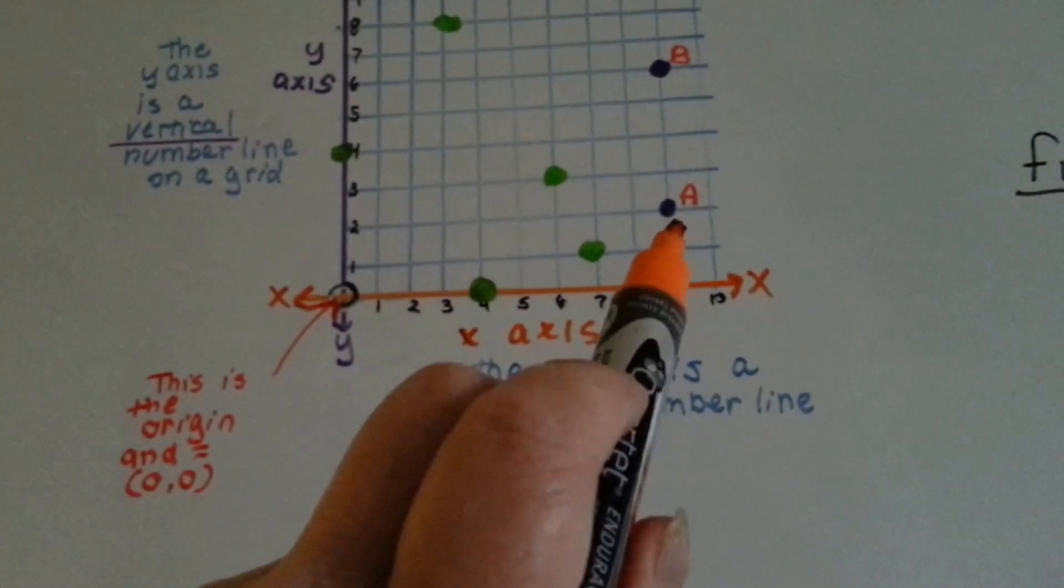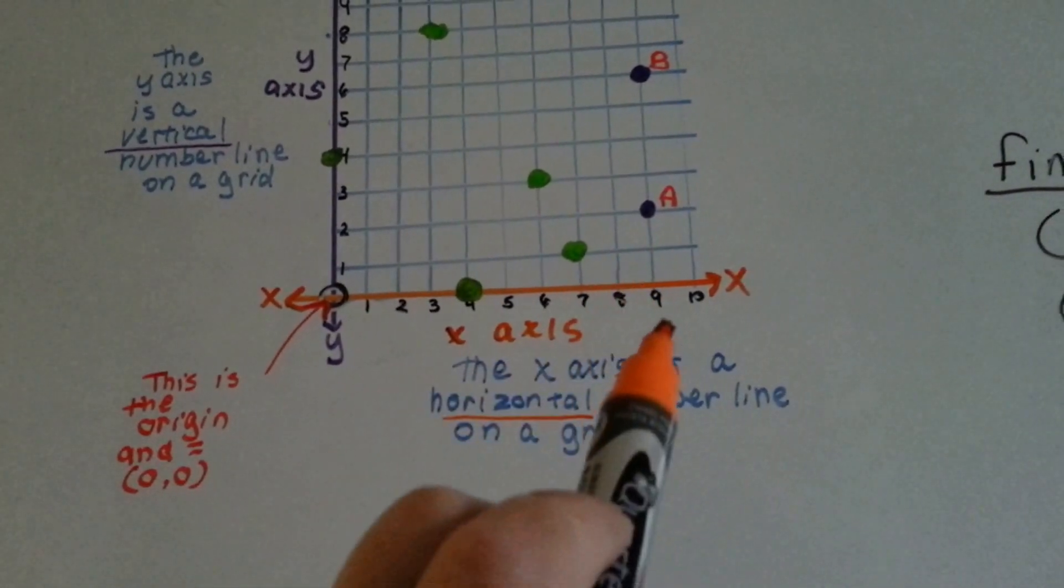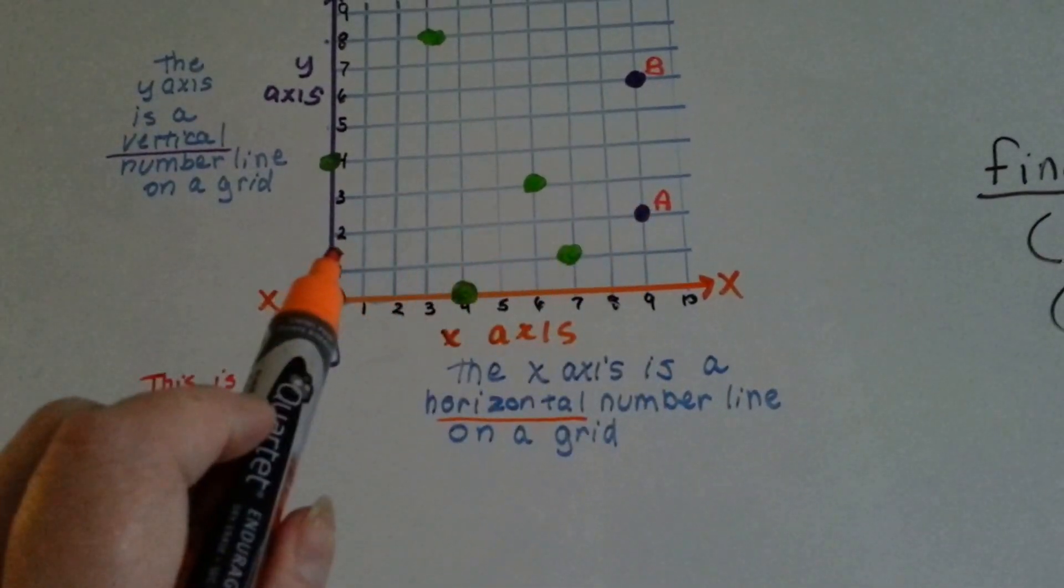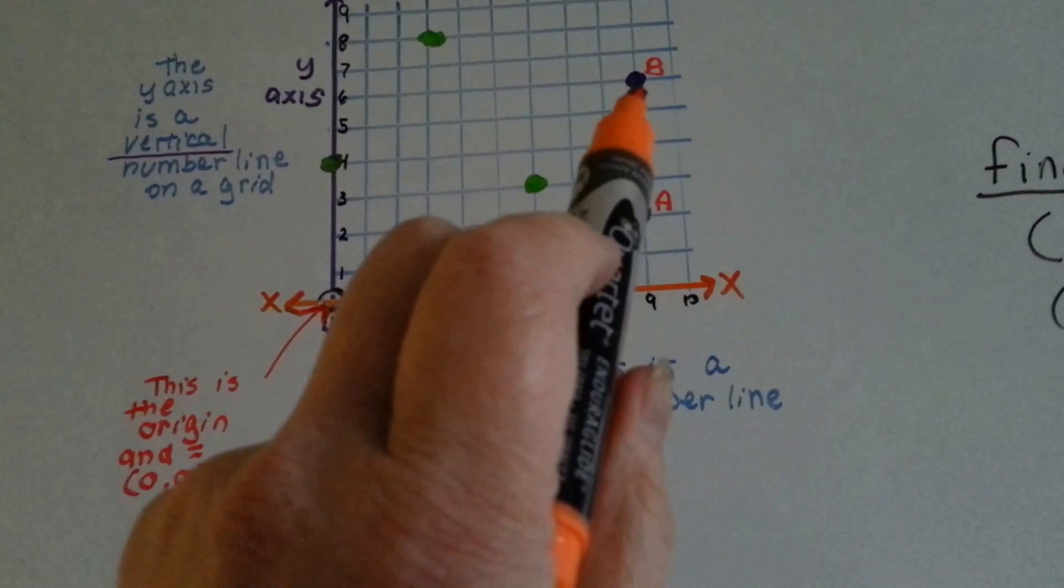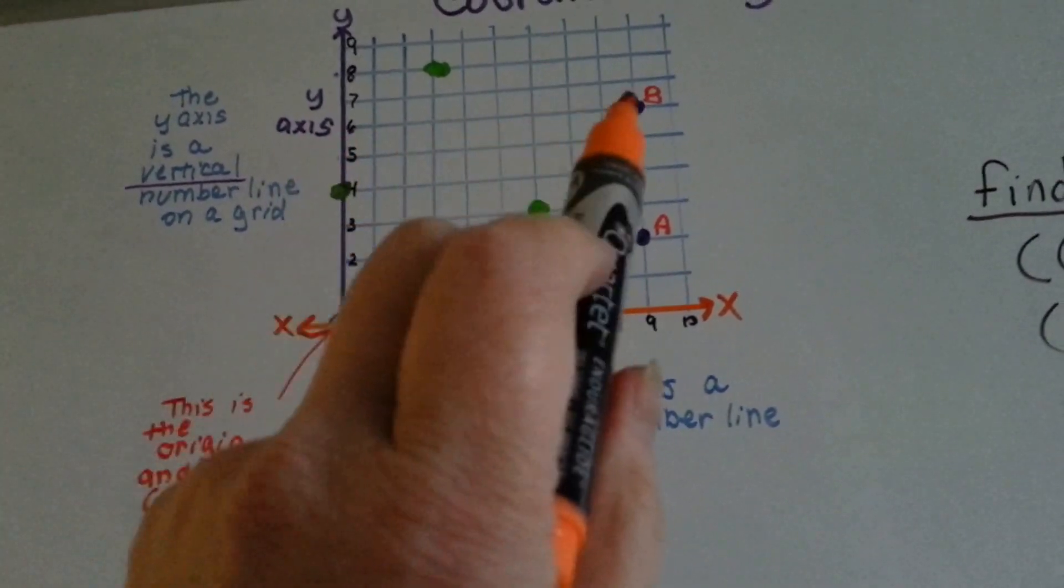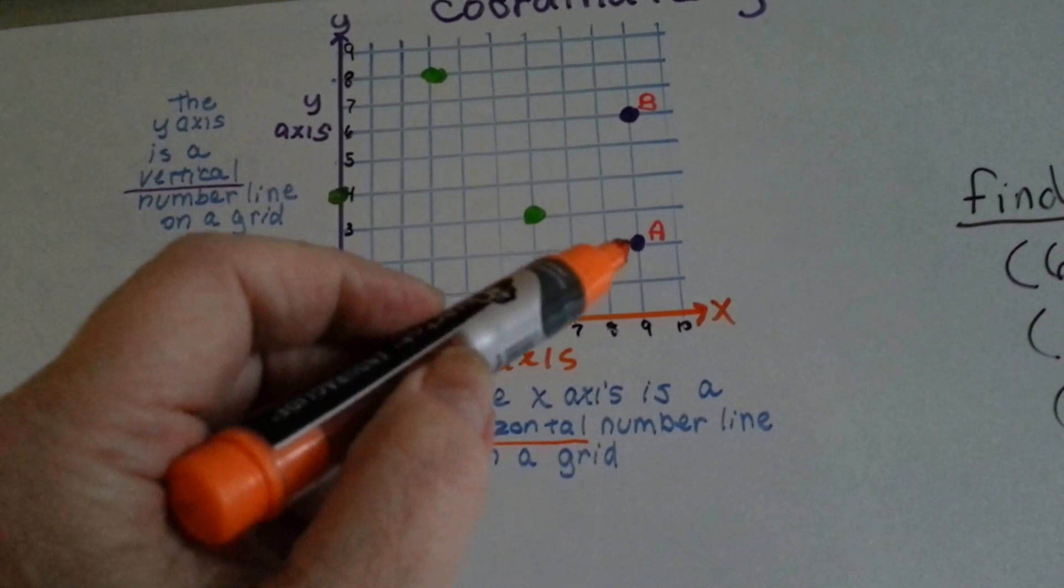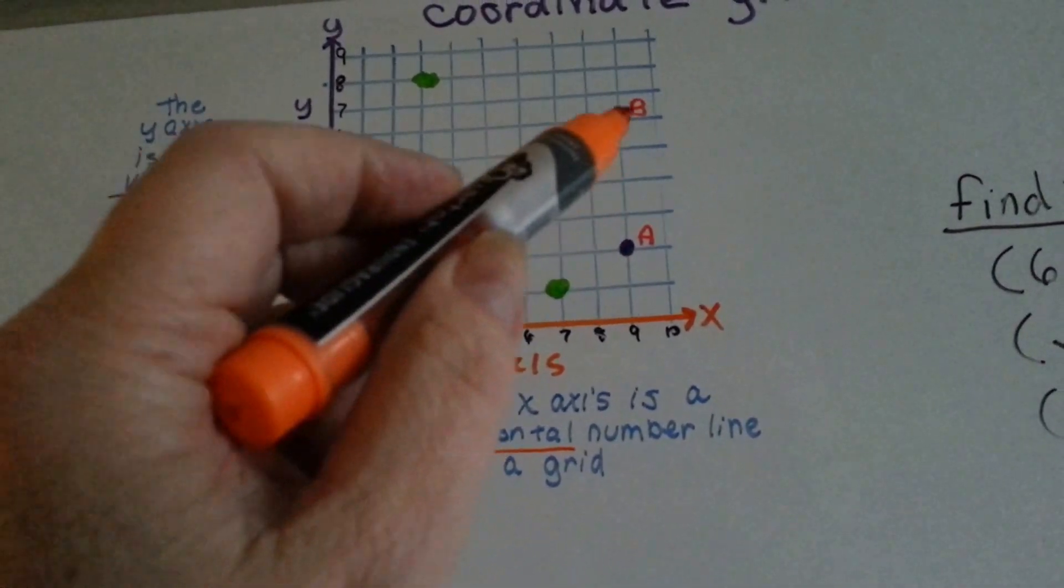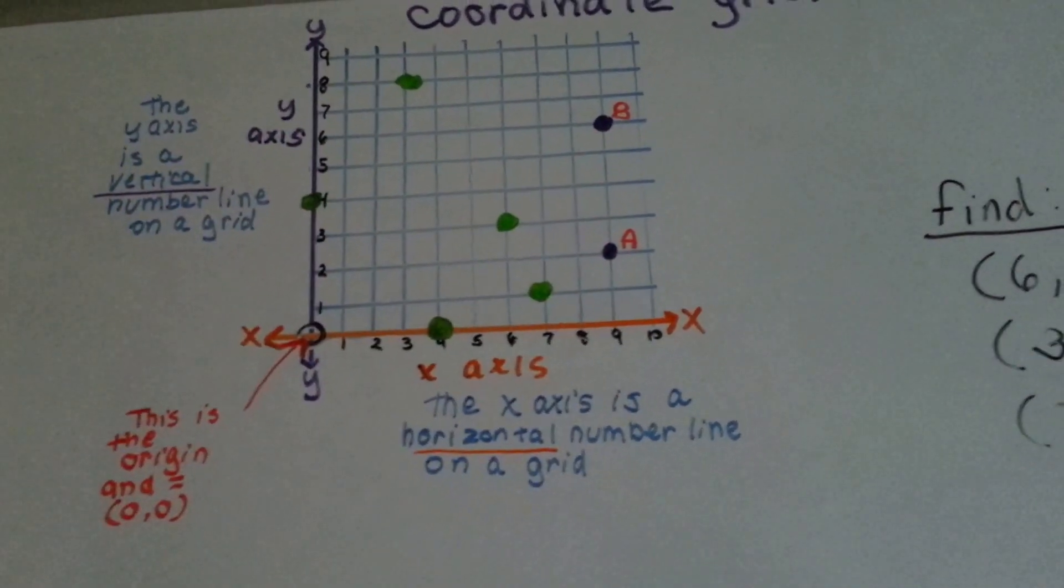So if we look at the grid, 9, 2 was the first point. Here's 9 on the x and 2 on the y, and then 9, 6 was the other point. Here's 9 on the x, 6 on the y, that's b, and we can count 1, 2, 3, 4. The distance is 4 apart.